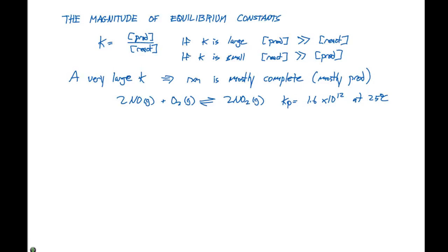We are going to have a large amount of NO2 and very small amounts of NO and O2. So we can say that this reaction favors products.